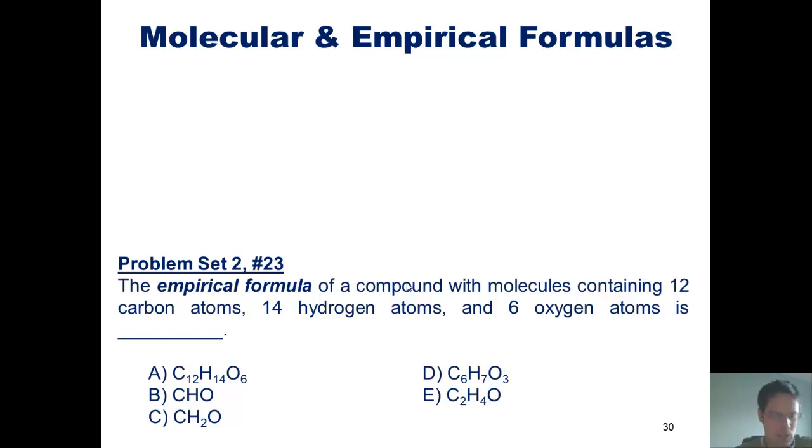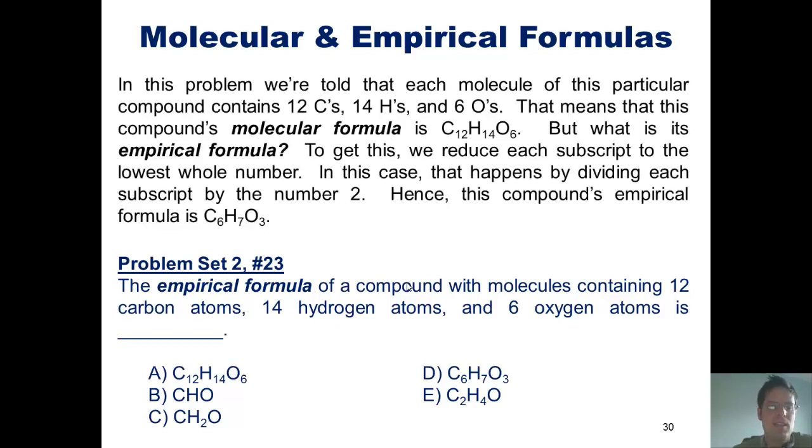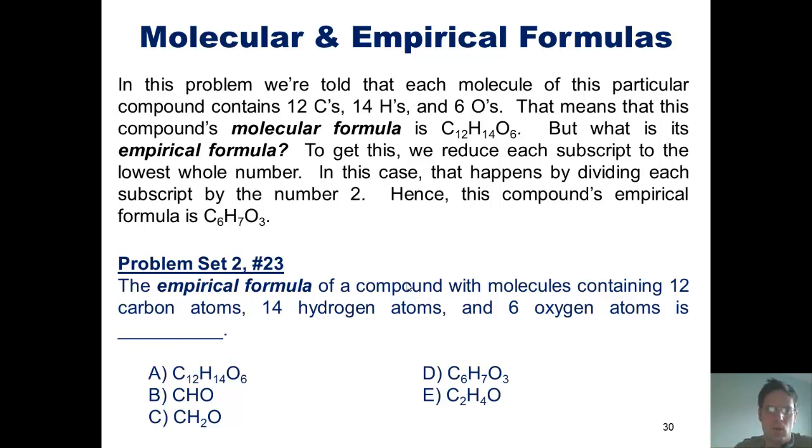So how do we do this problem? Let's take a look. In this problem, we're told that each molecule of this particular compound contains 12 C's, 14 H's, and 6 O's. That means that this compound's actual molecular formula is C12H1406. But what is its empirical formula?